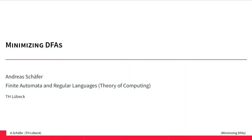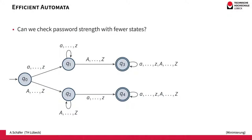This video is about minimizing deterministic finite automata — how to derive an automaton that has the fewest states possible. For a start, let's assume we have come up with this automaton here to check if a password contains uppercase and lowercase characters. And of course we would like this automaton to be as efficient as possible, so there should be no superfluous states.